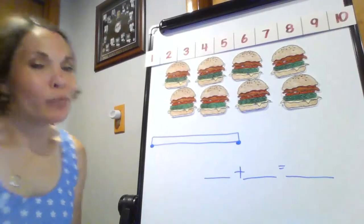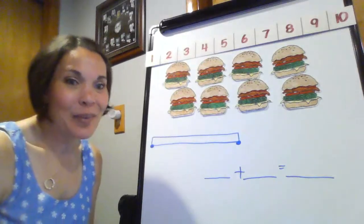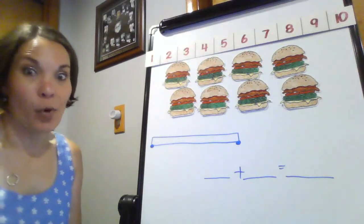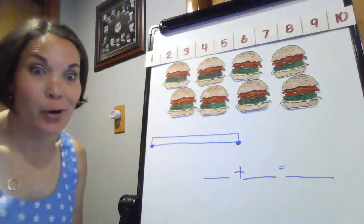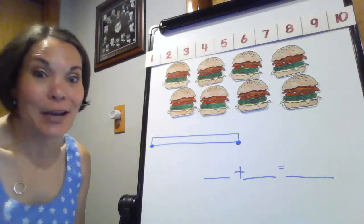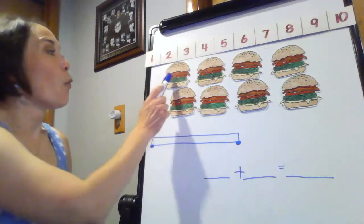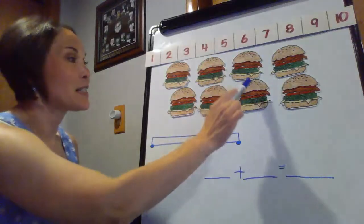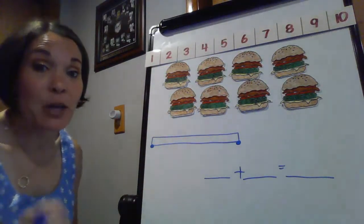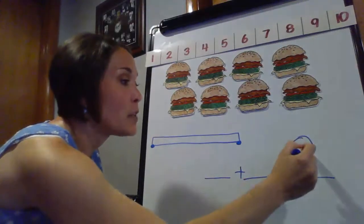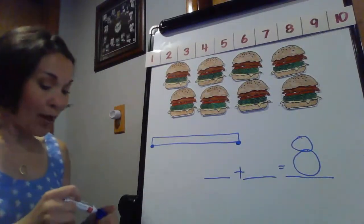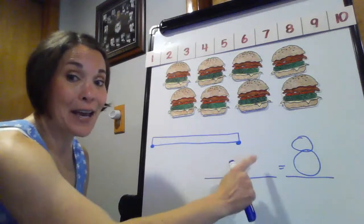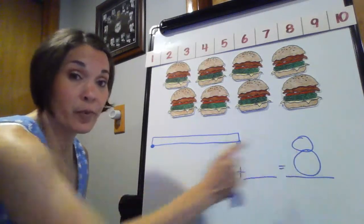I changed things up a little — I don't have candies anymore, I have burgers! Let's count how many burgers: one, two, three, four, five, six, seven, eight. So eight is going to be my new whole number — that's the number I need to find addends for.